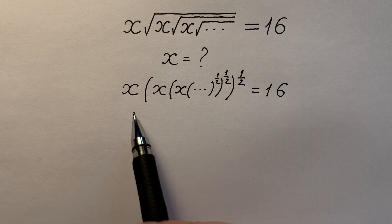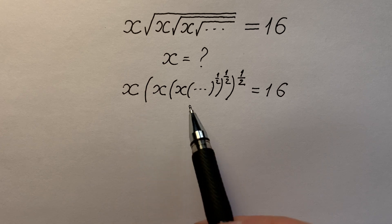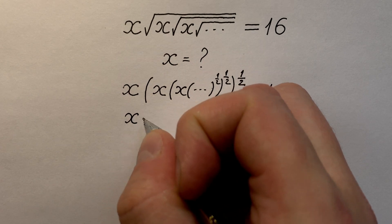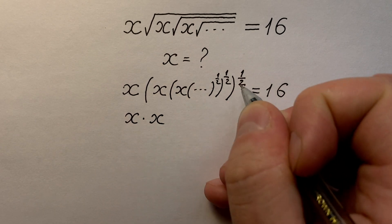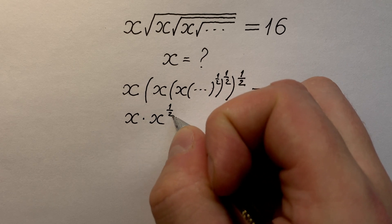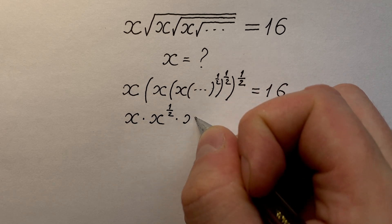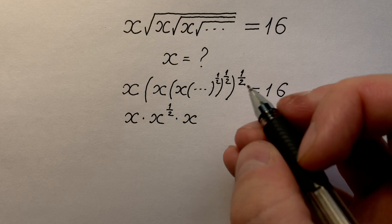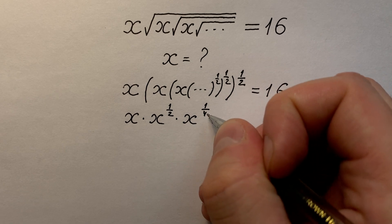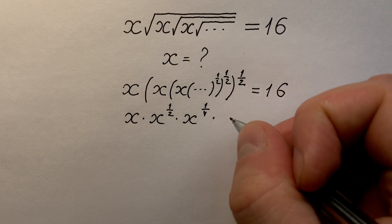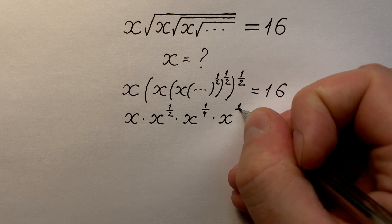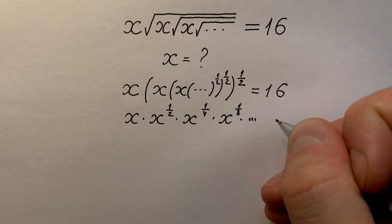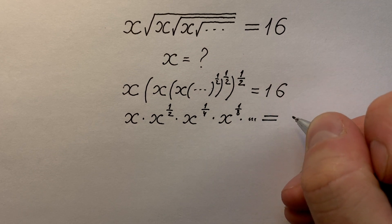Here we understand that left side is nothing but a product of functions. x times x to the power of 1 divided by 2 times x to the power of 1 divided by 4 times x and some others, and it equals to 16.